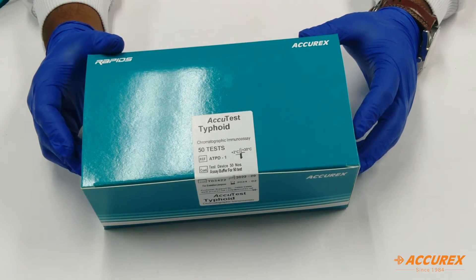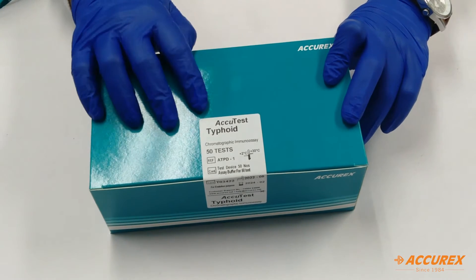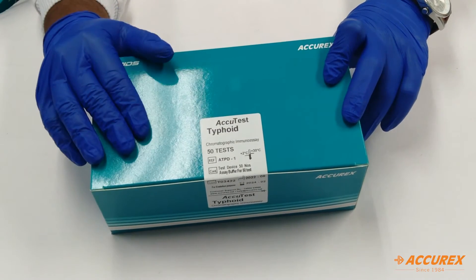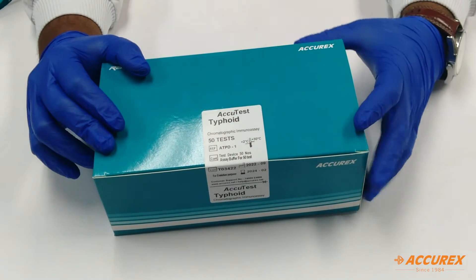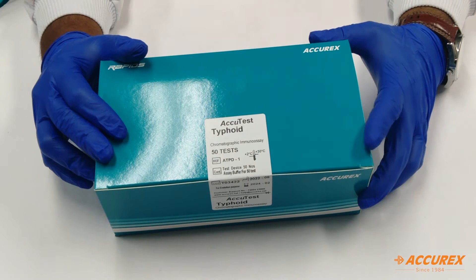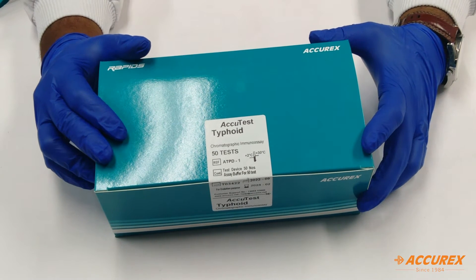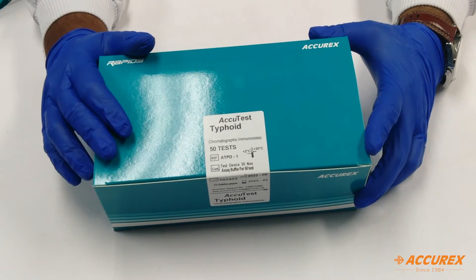Hello friends, welcome to Acurex YouTube channel. Today we have brought the product called Typhoid Acutest. This box contains 50 test cards for typhoid. Typhoid testing is basically used for detection and differentiation of anti-salmonella typhi IgG and IgM in human blood samples.